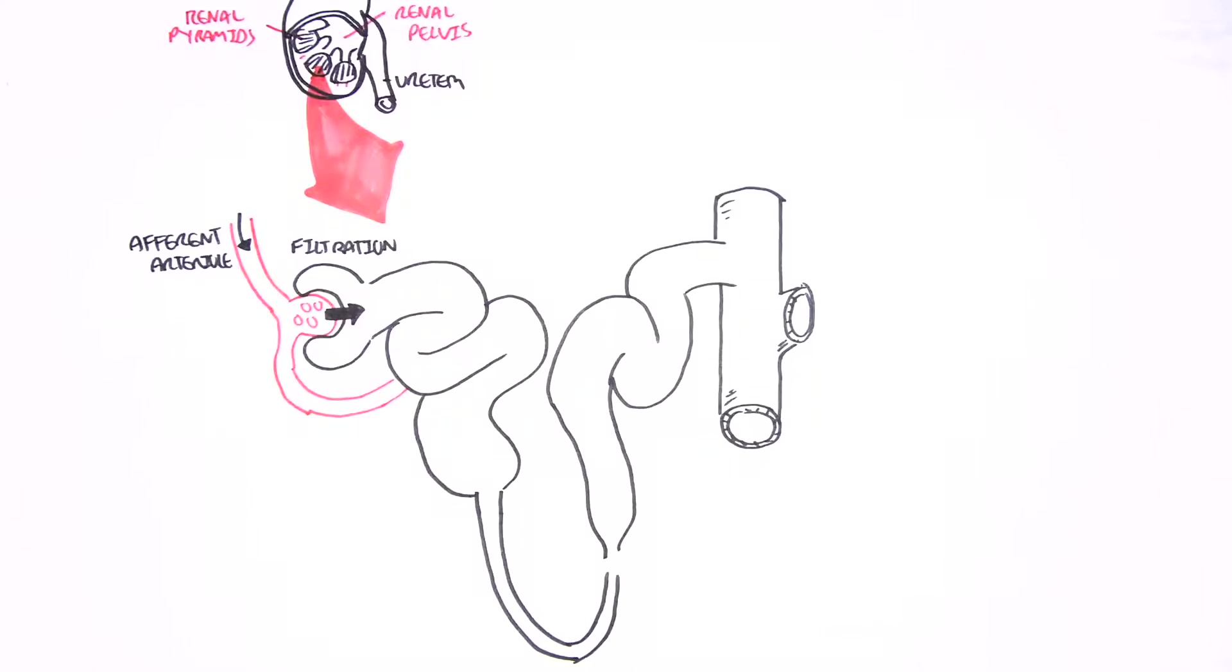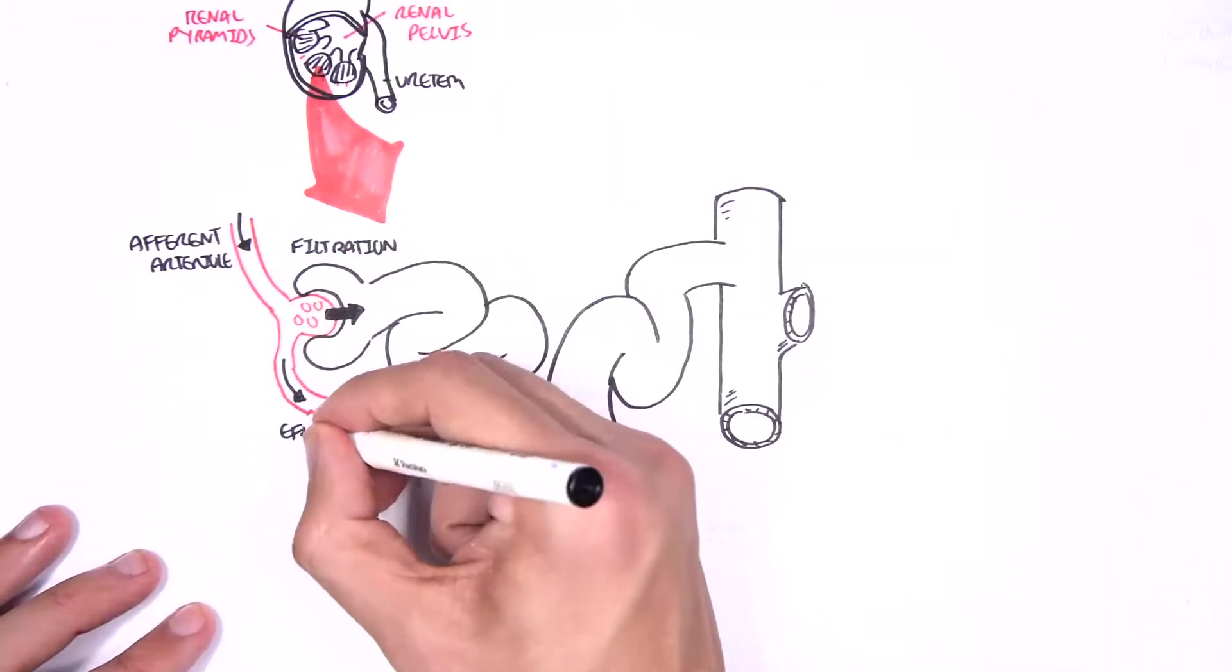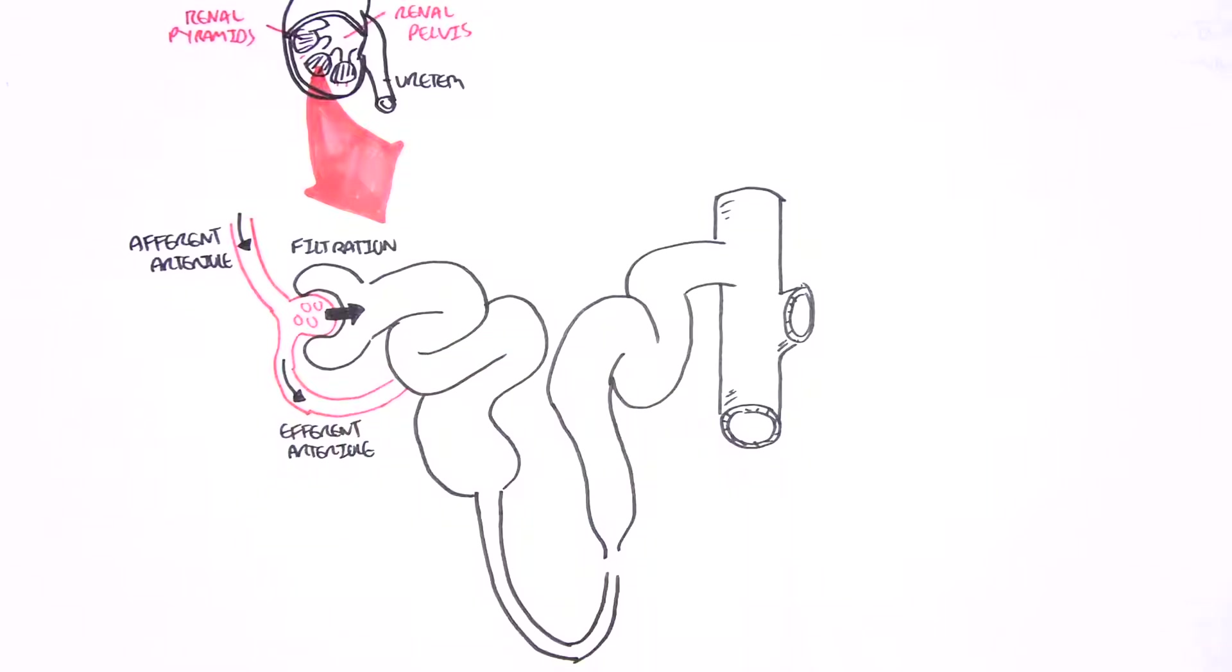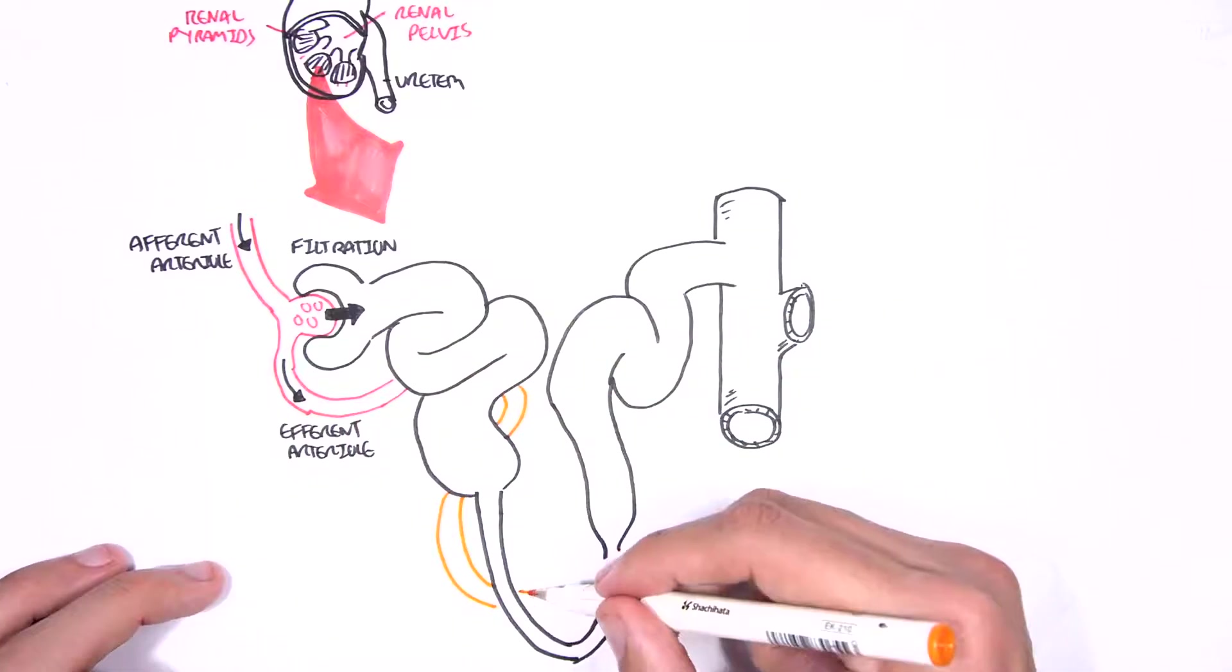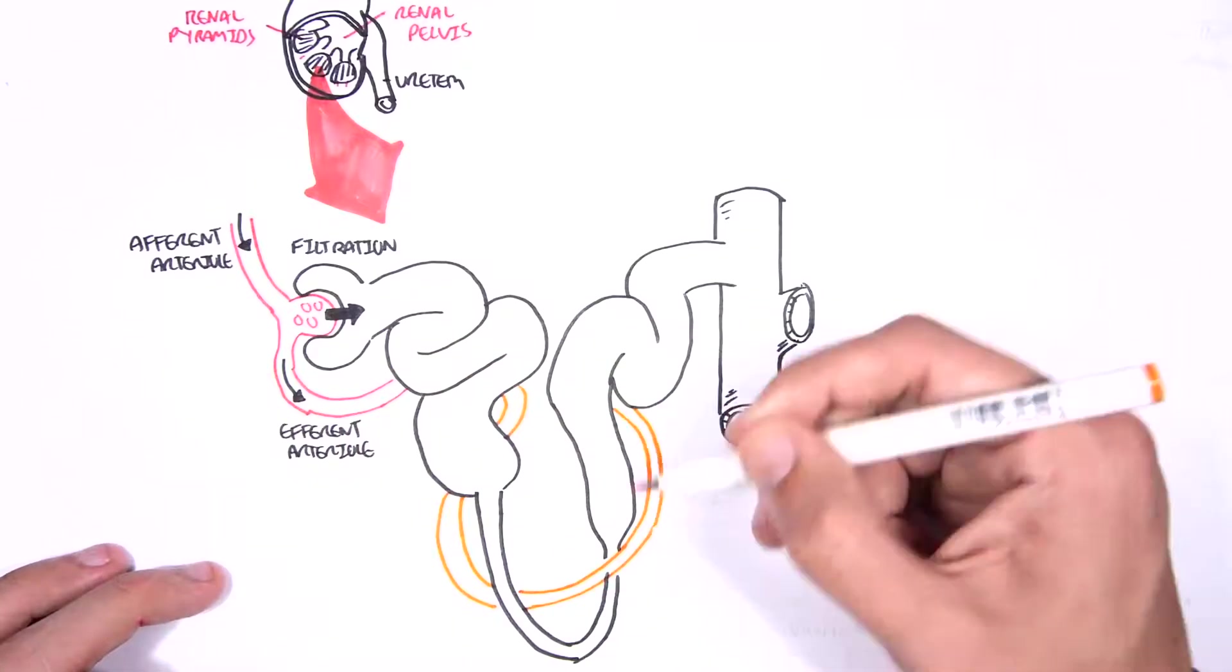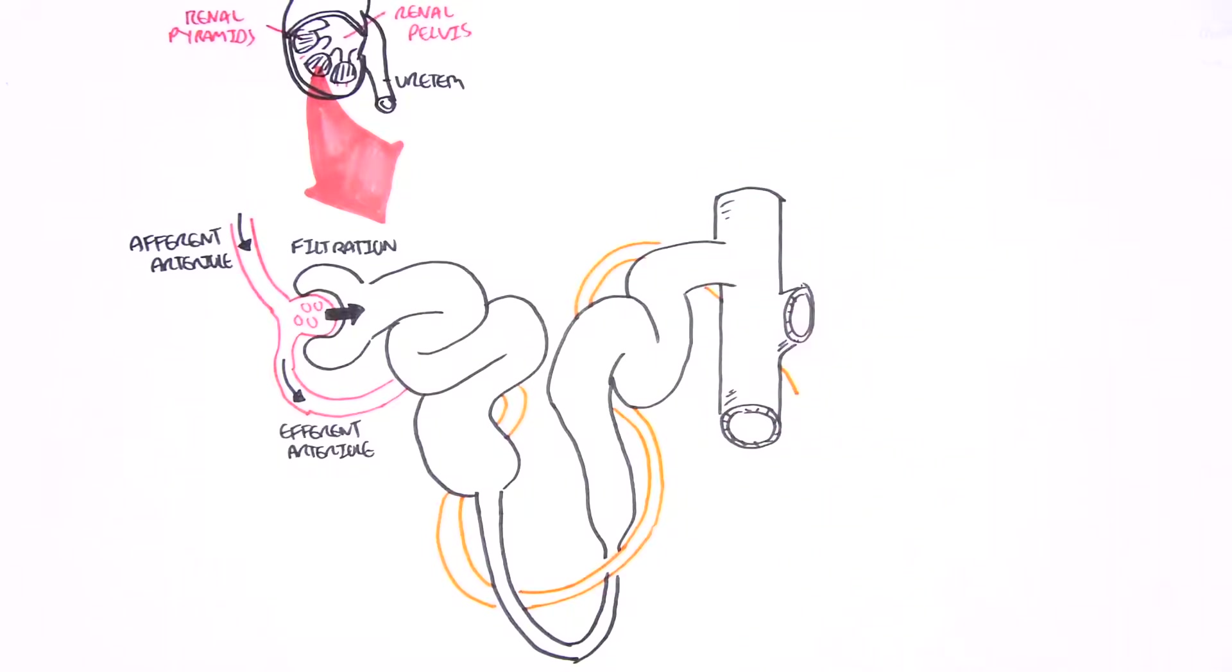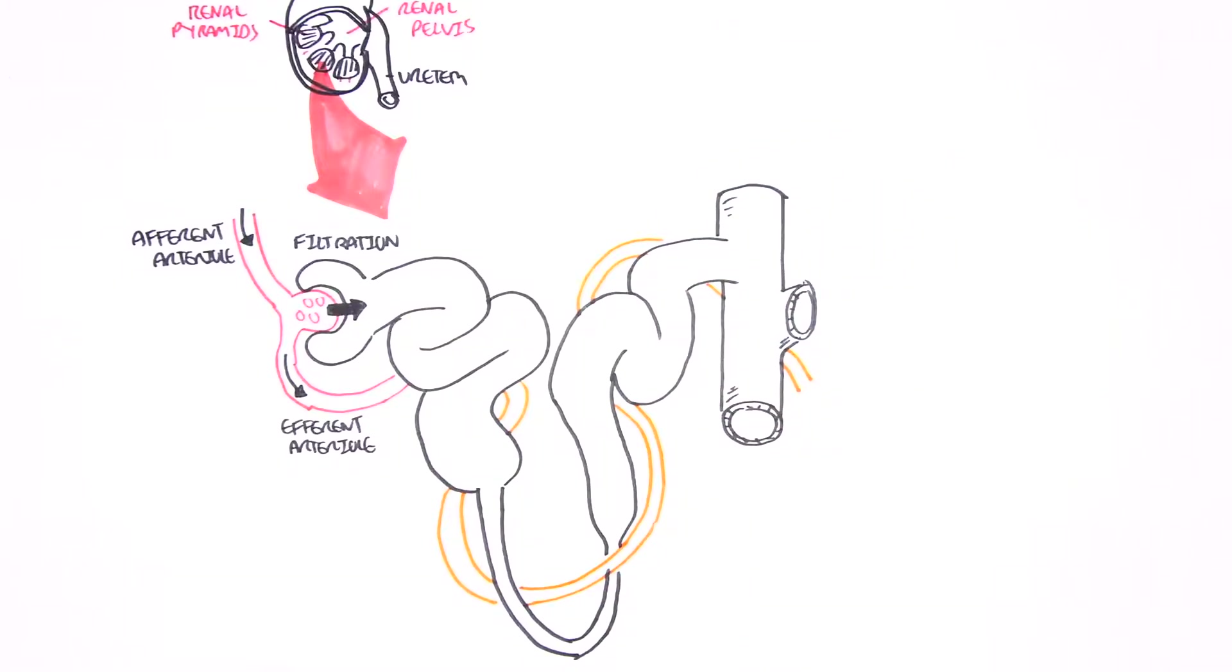This efferent arteriole will essentially make its way around the nephron as the vasa recta. The vasa recta's role is to reabsorb things from the filtrate that is within the nephron. The vasa recta will also secrete things that it doesn't need, secreting things from the blood back into the nephron as filtrate.